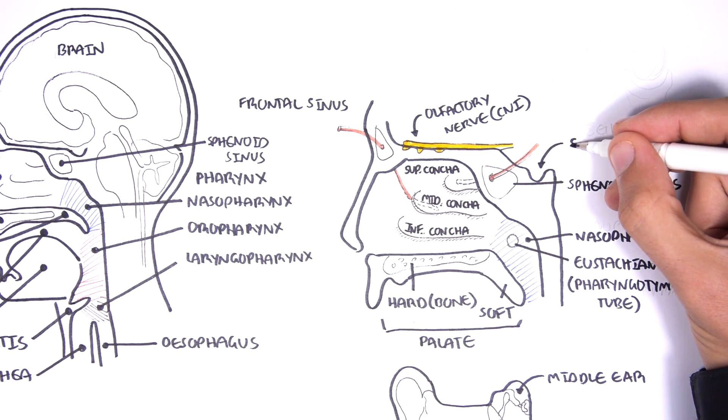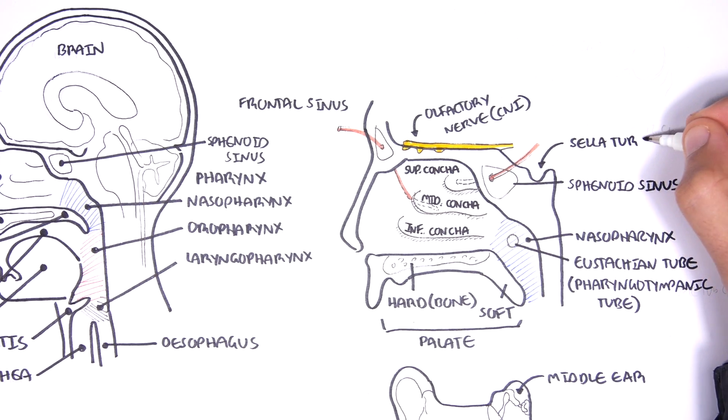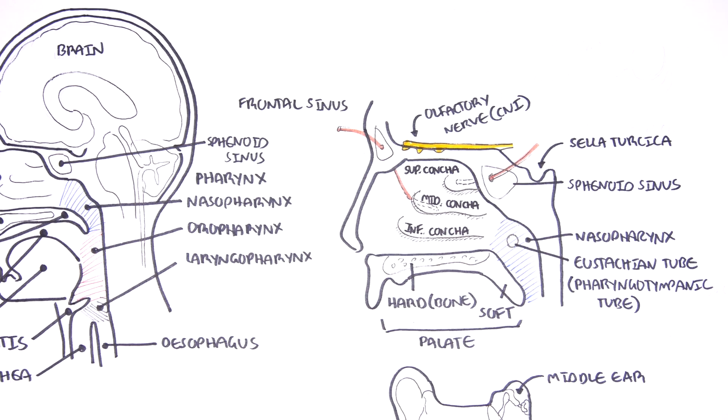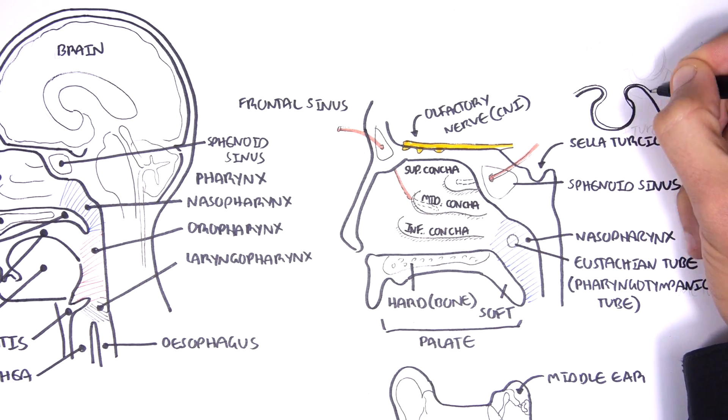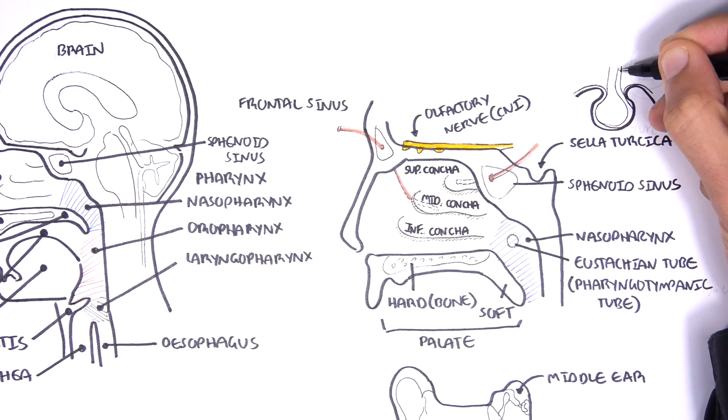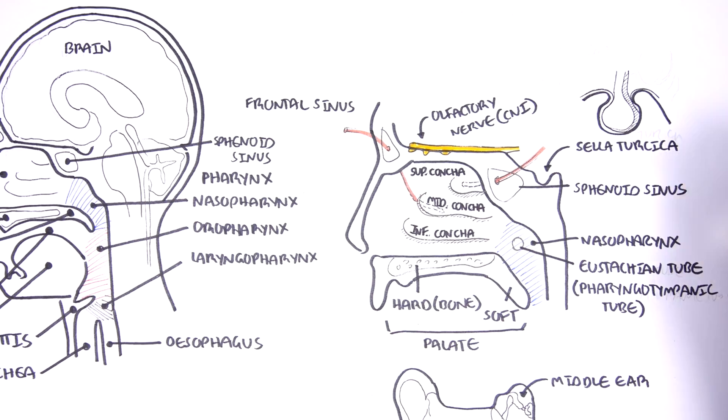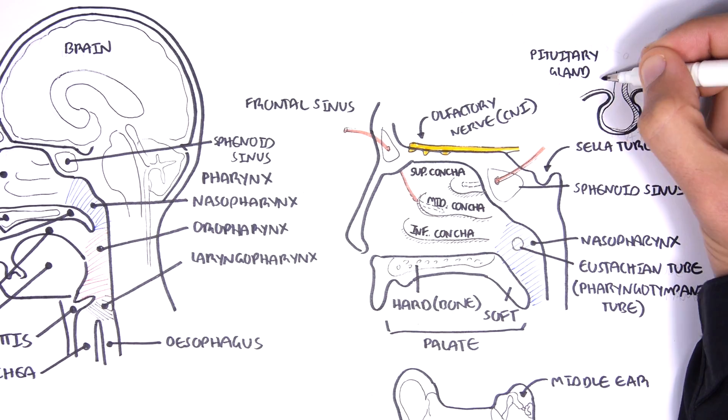Finally, it's important to mention the pouch here, which is the sella turcica, which translates to the Turkish seat or Turkish saddle. And this is essentially the pituitary fossa, where the pituitary gland sits. Of course, the gland doesn't actually sit on it, but it's rather protected or encased by it.